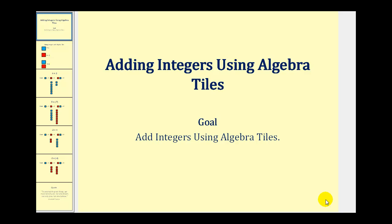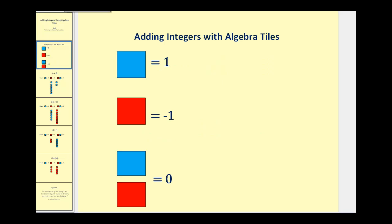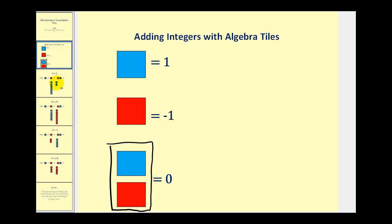Welcome to adding integers using algebra tiles. Using algebra tiles is a nice way to get an intuitive feel for adding integers. When using algebra tiles, we'll view a blue square as a positive one and a red square as negative one. We need to understand that if we group a positive one and a negative one together, the result would be zero. Once we're okay with this idea, we'll be able to add integers using algebra tiles.